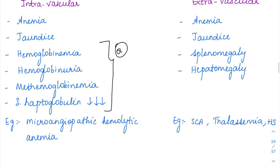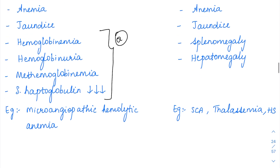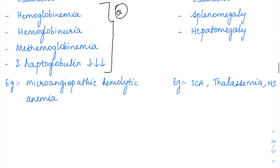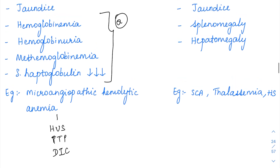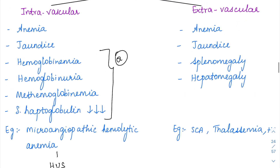Examples of intravascular hemolysis include microangiopathic hemolytic anemias. The examples of microangiopathic hemolytic anemias are hemolytic uremic syndrome (HUS), thrombotic thrombocytopenic purpura (TTP), and DIC — disseminated intravascular coagulation. In all three there is going to be damage of the RBCs inside the vessels.